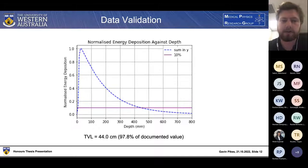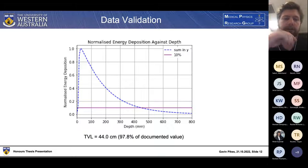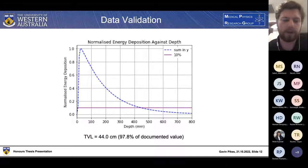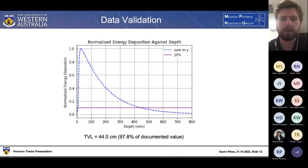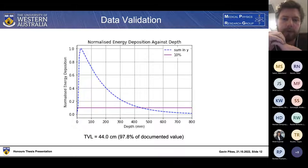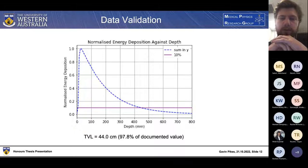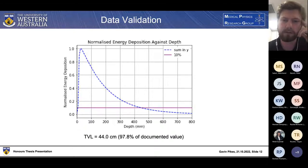Looking at the tenth value layer of the primary barrier: we're plotting energy deposition in the primary barrier as a function of depth, following a photon attenuation curve. The simulated results are in blue, with the 10% energy deposition line in purple. These two lines intersect at 44.0 centimetres, which is 98% of the documented value of the 45-centimetre TVL for an 18 MV beam — again showing a high level of agreement between simulated and measured results.